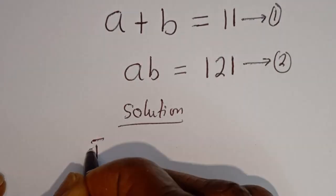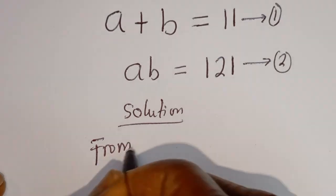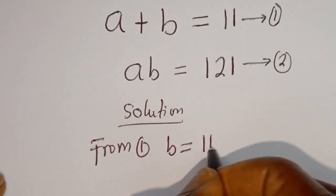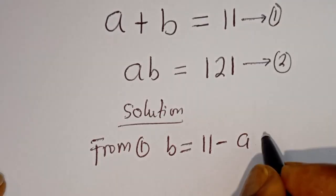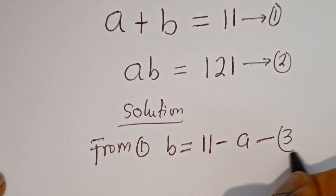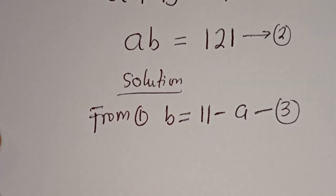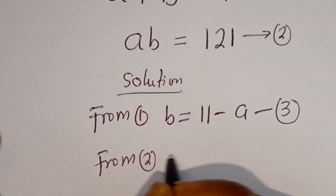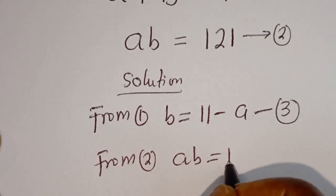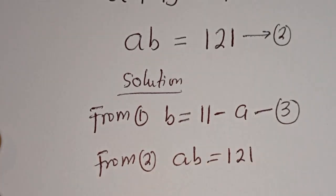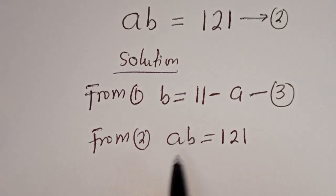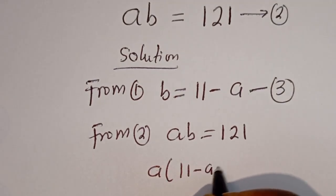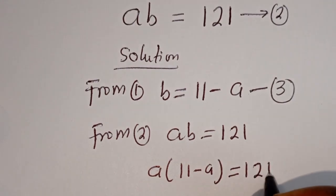From equation 1, B is equal to 11 minus A. Let's call this equation 3. Also from equation 2, AB is equal to 121. Let's substitute for B: A times (11 minus A) is equal to 121.